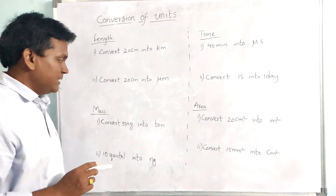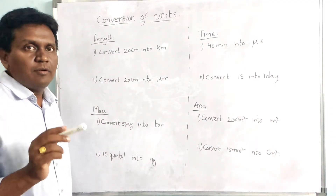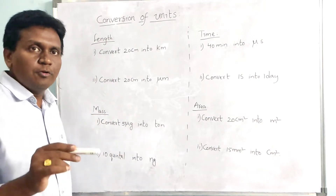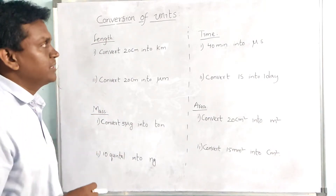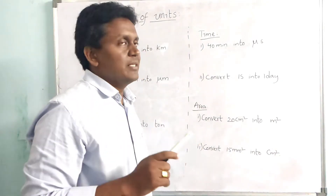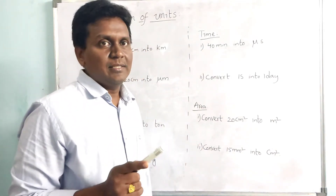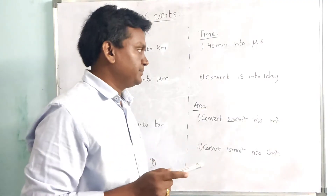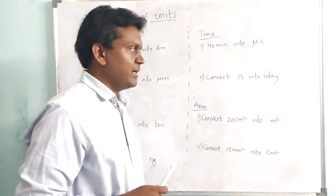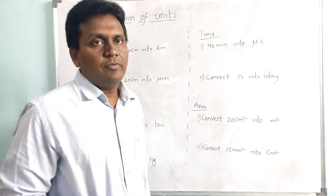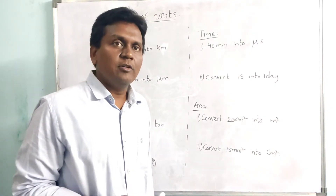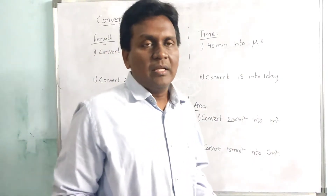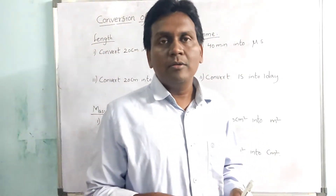In the same way, for mass, kilogram is the SI unit. So whatever unit is given, it should be converted into kilograms. For time, we have to convert the given unit into seconds — second is the SI unit of time. For area, meter square is the SI unit, so first we convert into meter square, then into the desired unit.